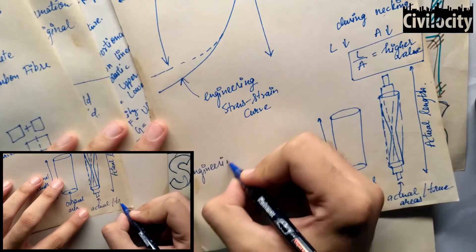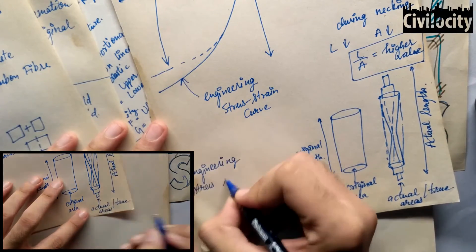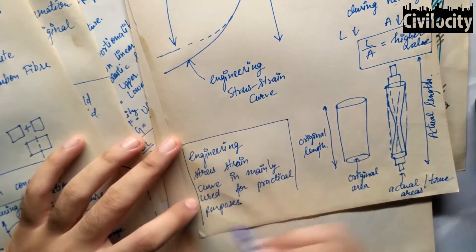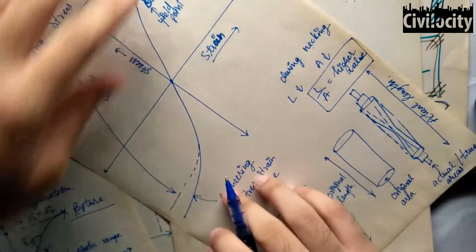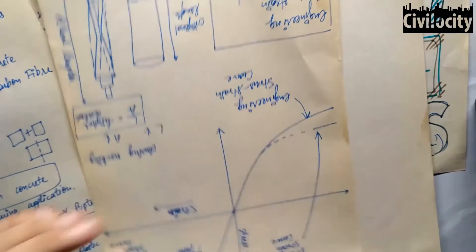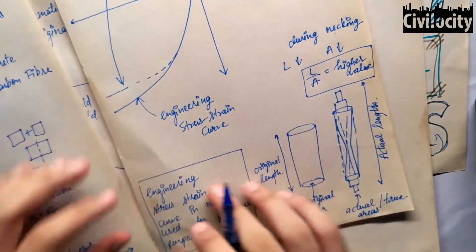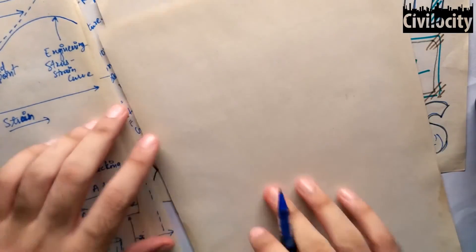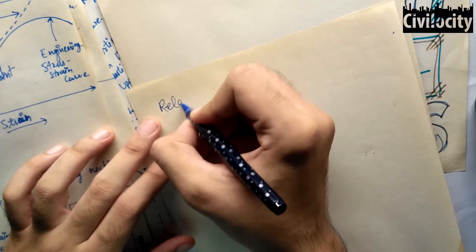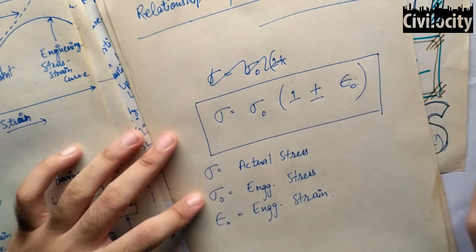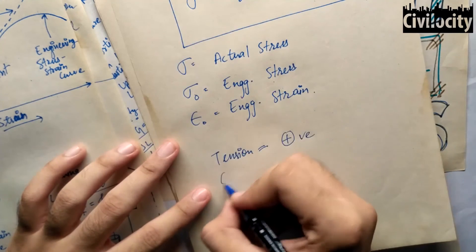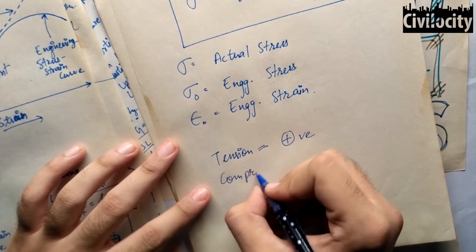For practical purposes, we only use the engineering stress-strain curve. During compression, the true stress-strain curve is below the engineering stress-strain curve because the resisting area in compression increases. There is also a relationship between engineering stress and actual stress: actual stress equals engineering stress multiplied by (1 ± engineering strain), where we take the positive sign for tension and the negative sign for compression.